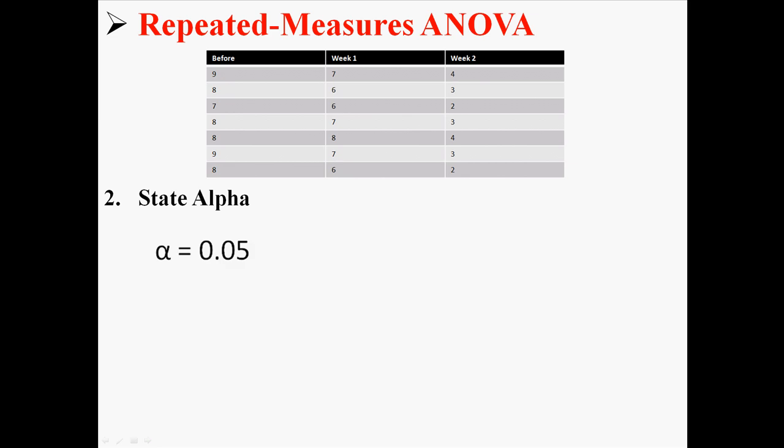Stating alpha. Alpha, I said to use 0.05 and you're going to use whatever, usually 0.05 or 0.01 or something like that. Here it's 0.05.